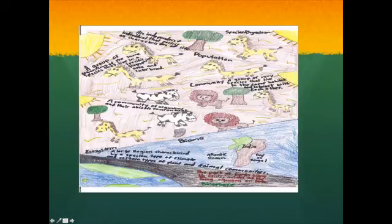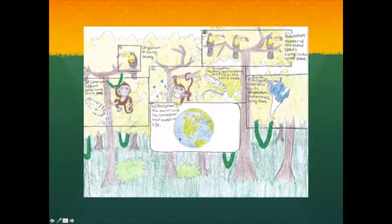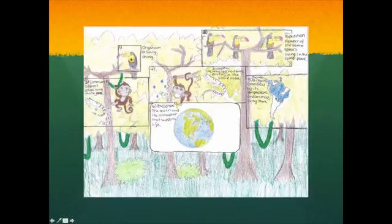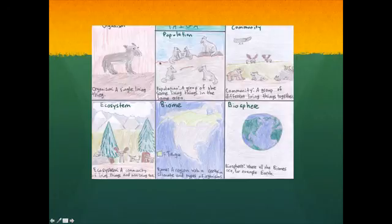One example shows the levels organized into little triangles — organism, population, community, ecosystem with non-living parts shown, biome, and then biosphere. Another student just drew one whole picture of their biome and then identified the parts within it, boxing and labeling organism, population, and so on. Remember, you don't have to be the best artist. This person wasn't the best artist but did the best they could, and their drawing is amazing — all six levels from smallest up to the largest, which is the biosphere.